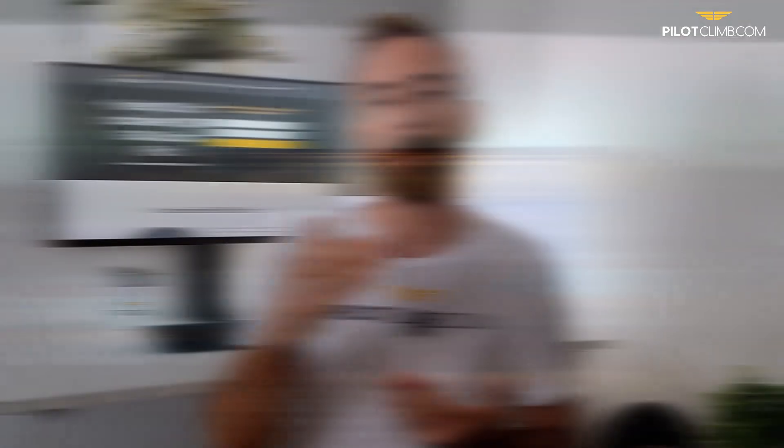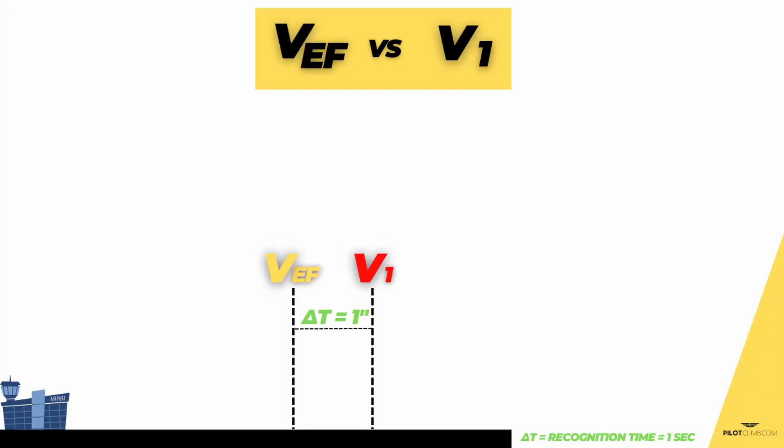Because if you abort the take-off at a speed above V1, what could happen is that you don't have enough runway to stop the aircraft. So, the only option after V1 is to continue. That's why the VEF is very important — it's the most critical speed at which an engine failure can occur, that gives you the time to recognize the engine failure and decide whether to stop or continue. I hope you understand the difference between the VEF and the V1.